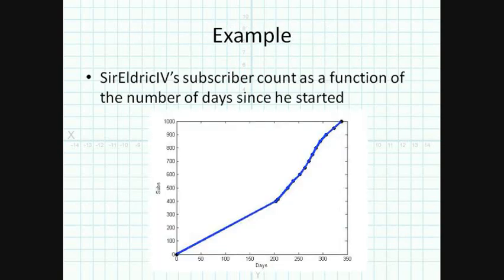So for an example, I thought I would look at Sir Eldrick IV's subscriber count as a function of the number of days since he started his channel. Congratulations, Eldrick, on a thousand subs. Most of the data is provided by Eldrick himself in his comments as he was able to chronicle his subscriber count on an occasional basis. There is not much information about the earlier days, unfortunately. However, we have a hardy number of data points more recently. So as you can tell, here is a quick graph of what we have, and it does seem to have a roughly linear function. So let's run our linear regression and see what we come up with.